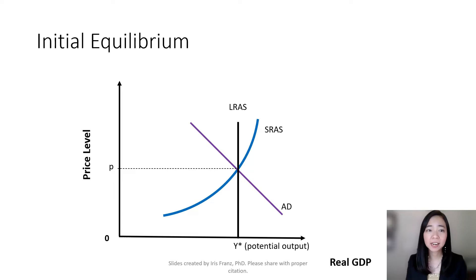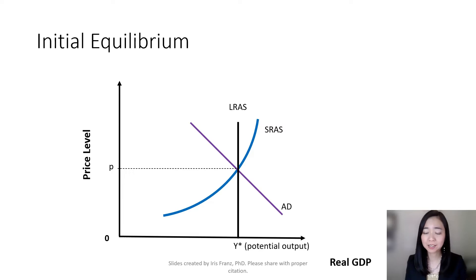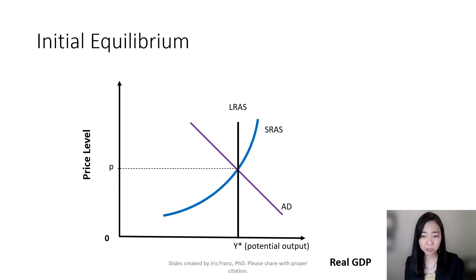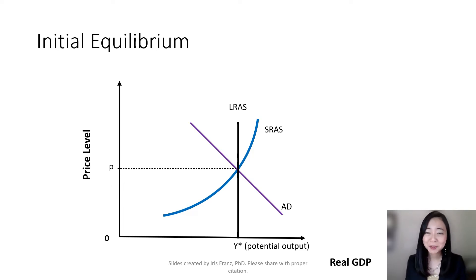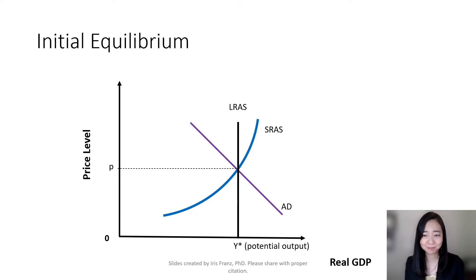Here is our initial equilibrium where we see the intersection of the long-run aggregate supply curve, the short-run aggregate supply curve, and the aggregate demand curve. They all intersect together, and at the intersection we see the equilibrium price level and the potential output. Notice that at this potential output there is no cyclical unemployment.